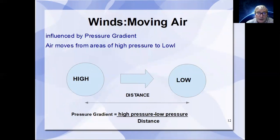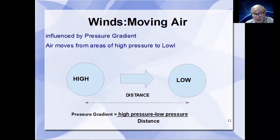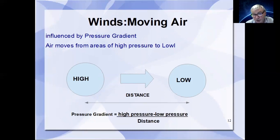Moving on to wind — if we have an area of high pressure and an area of low pressure, air will want to move from the high towards the low to balance itself out. We can determine the pressure gradient by measuring the difference in pressure per unit of distance. High pressure on the left, low pressure on the right: subtract the two figures and divide by the distance to get the pressure gradient.